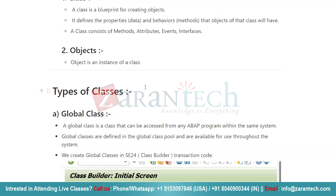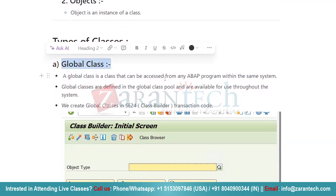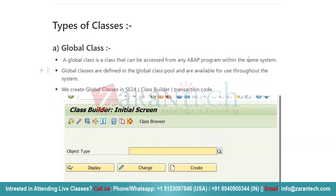Now, how many types of classes are there in ABAP? We basically have two types. The first one is global class. A global class can be accessed from any ABAP program within the SAP system — you can access it in any report you create in SE38, the ABAP editor transaction code. Global classes are defined in a global class pool and are available for use throughout the system.